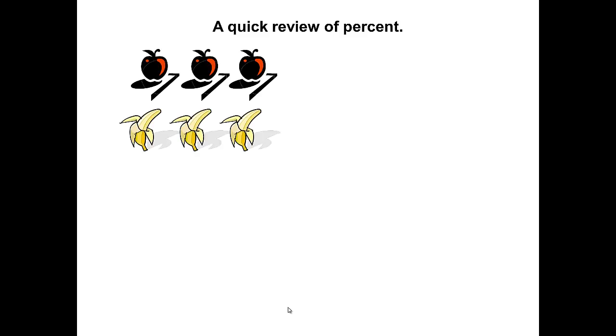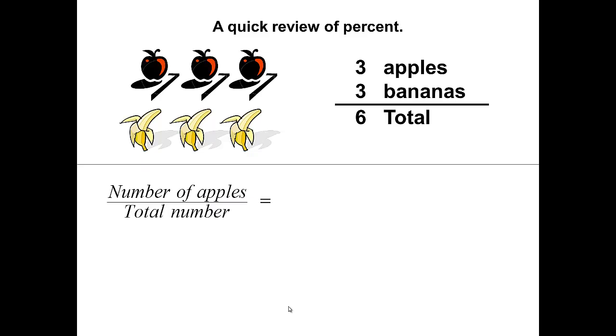Let's do this in context of looking at a sample of fruit. We have three apples, three bananas, for a total of six fruit. We want to look at the number of apples compared to the total number, and we want to compare the two numbers by division. So we have three apples over the total of six, which gives us three over six, and that reduces to one-half.